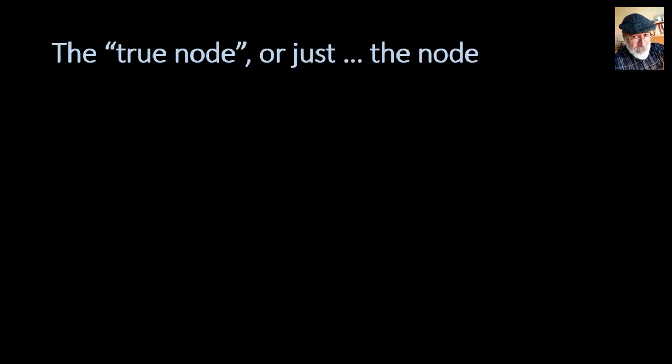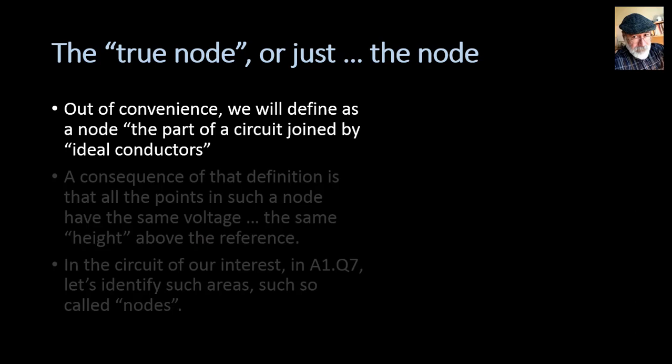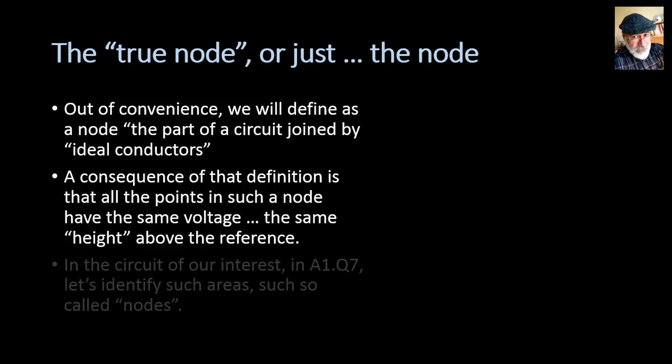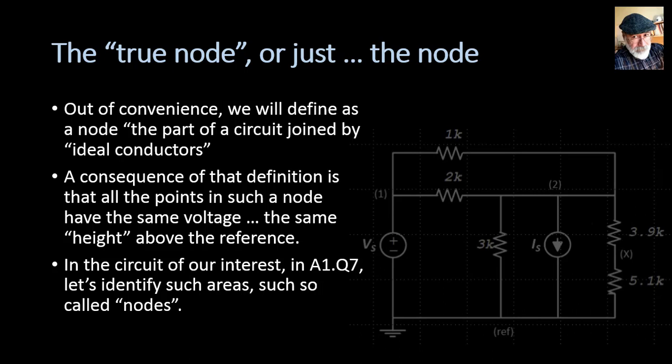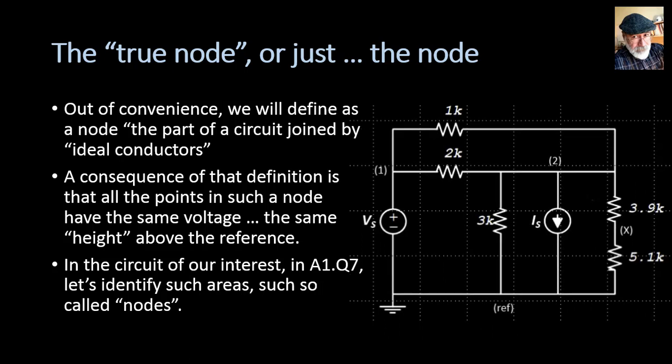Then we introduce a new concept and name a true node or just another node. Out of convenience, we will define as a node the part of the circuit that is joined by ideal conductor. It's just a way of introducing that. A consequence of that definition is that all the points in such a node have the same voltage, the same electric height above the chosen reference. In the circuit of our interest, in A1Q7, let's identify such nodes.